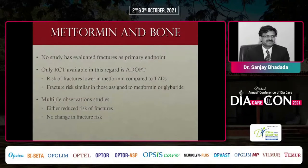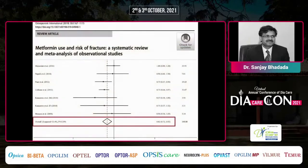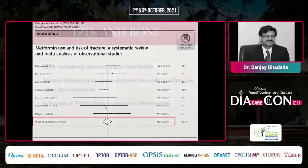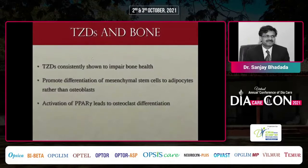Looking at the clinical literature on metformin, there is only one RCT available — the ADOPT trial — which compared metformin to thiazolidinediones and found that the risk of fracture was lower in people receiving metformin. Multiple observational studies have also shown that metformin either reduces fracture risk or produces no change. A 2019 meta-analysis in Osteoporosis International demonstrated almost an 18% reduction in fracture risk with metformin in type 2 diabetes, so metformin appears effective or at least neutral for bone health.